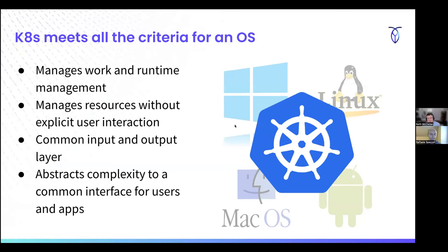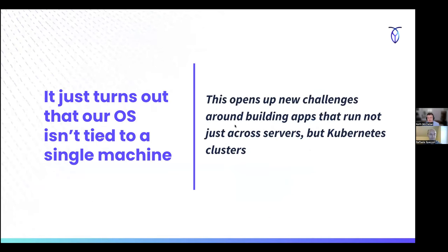In my opinion, Kubernetes meets all of the criteria for an operating system. It manages work and runtime. It manages the resources without explicit user interaction. When was the last time you picked which CPU core on your MacBook was running your application? You don't do that — the operating system handles that for you. It's got a common input and output layer. As an application developer, as an administrator, as a user, I interact with a common API gateway, and the system handles all of this for me, abstracting away the complexity of running an application across a cluster of machines.